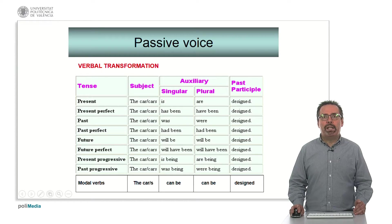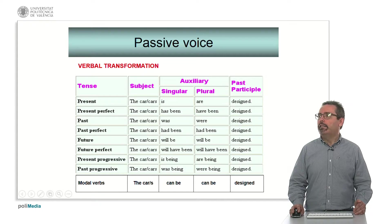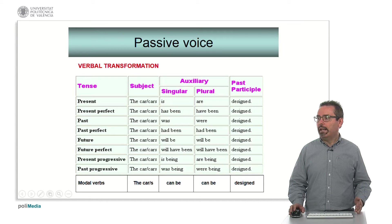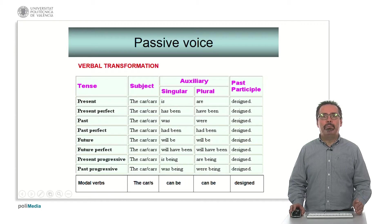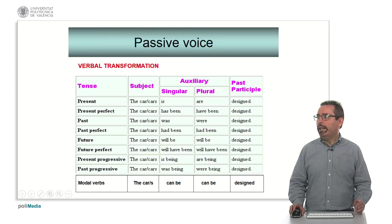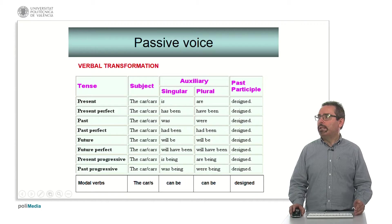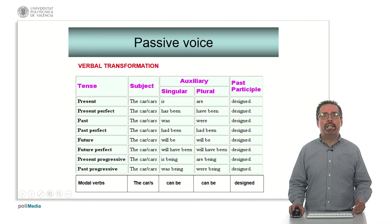An important thing in passive voice construction is verbal transformations. The general rule is very clear. We put the subject of the passive sentence first, and then we use exactly the same tense of the verb 'to be', followed by the past participle of the corresponding verb. Here we have a summary, a list of the most important cases we can deal with: present, present perfect, past, past perfect, future, etc. It doesn't matter how easy or complicated the verb is — the rule is mechanical, it's exactly the same.